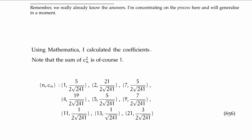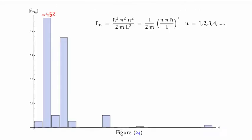The next thing I'm going to do is plot a bar chart of the square of the c sub n's to look at the probability of measuring the particular particle in a particular basis state. Having computed all of the c sub n's, we plot them in a bar chart and it looks like this. If you look closely, the n=2 basis state corresponds to a probability of approximately 45 percent.